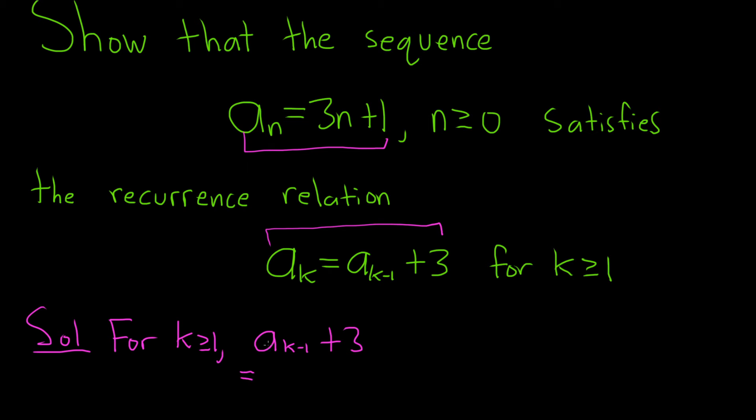So $a_n$ is $3n + 1$. So $a_{k-1}$ is the same, except we replace $n$ with $k - 1$. So this is $3(k - 1)$, replacing our $n$ here with $k - 1$. And then we still have the plus 1, and then we still have the plus 3.